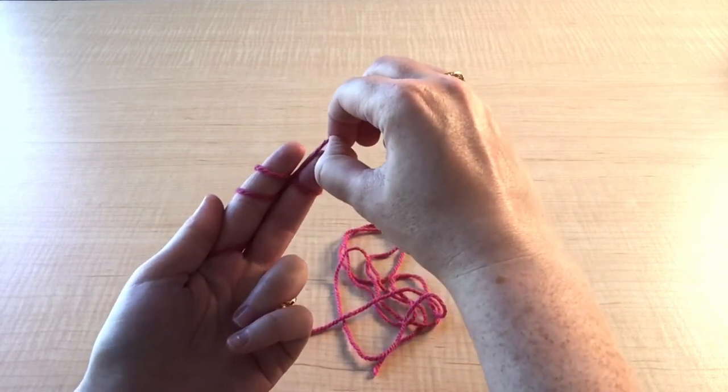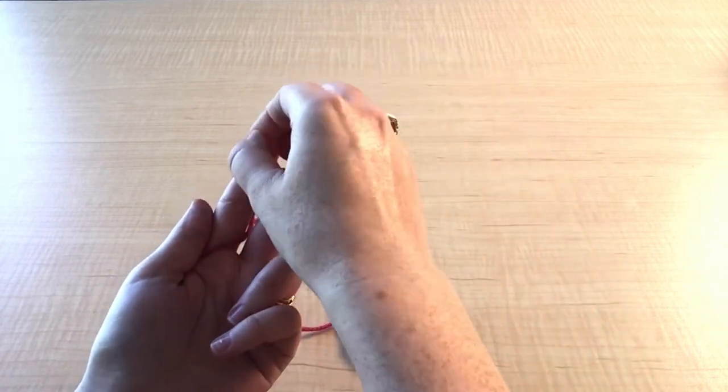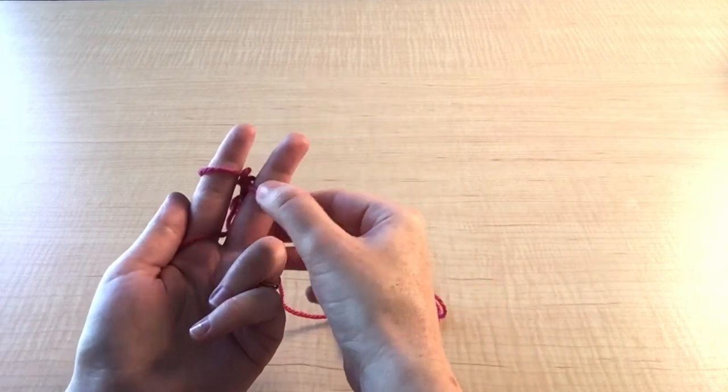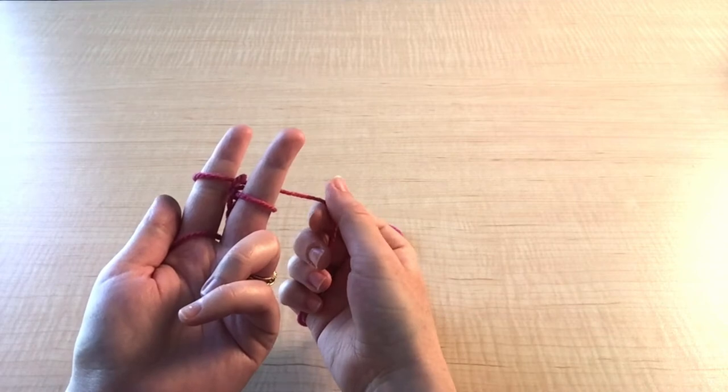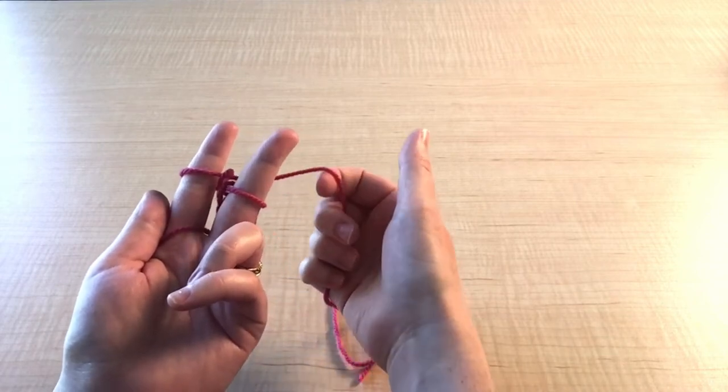Remove the bottom loops up and over each finger for the second stitch. And now we'll keep winding, lifting loops on your fingers or stitching until we have the length of a bracelet.